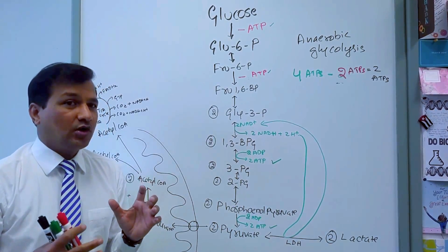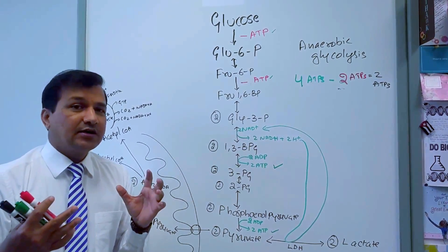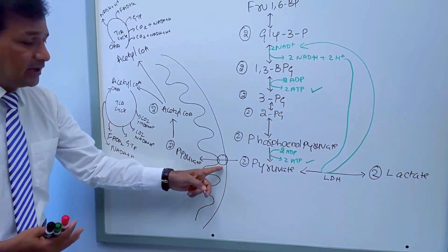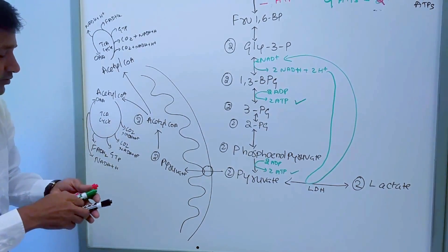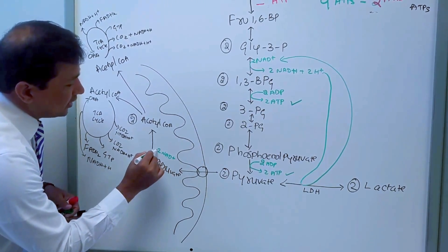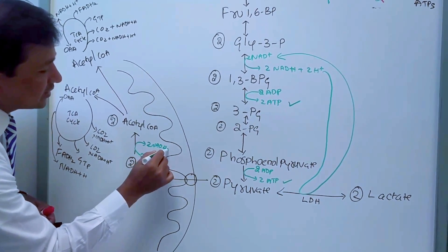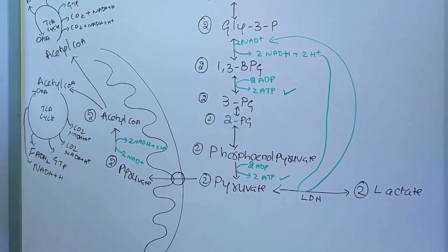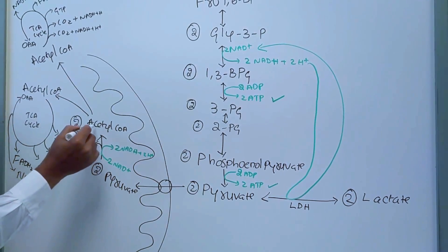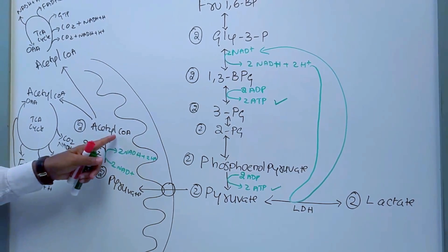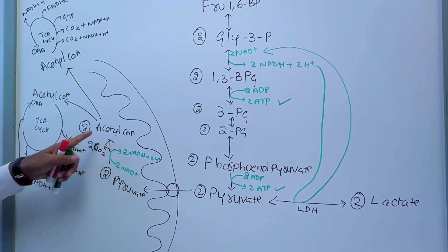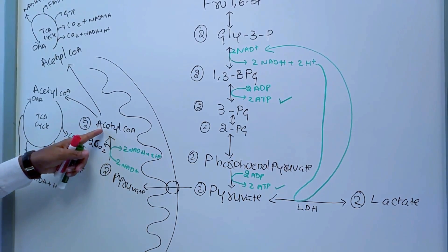Under aerobic conditions, the cell has sufficient oxygen and mitochondria. The two pyruvates enter the mitochondrial matrix via the pyruvate transporter and are converted to two acetyl-CoA by pyruvate dehydrogenase. During this process, 2 NAD+ are consumed and released as 2 NADH + 2H+, and two carbon dioxide molecules are released — since pyruvate is a three-carbon molecule and acetyl-CoA is a two-carbon molecule.